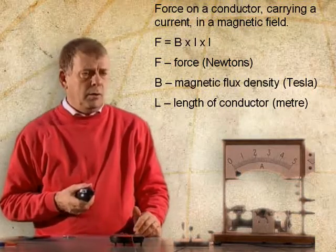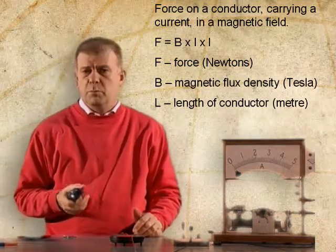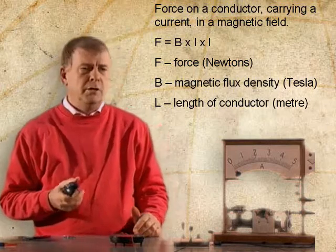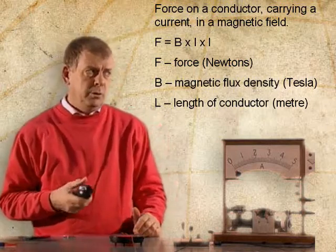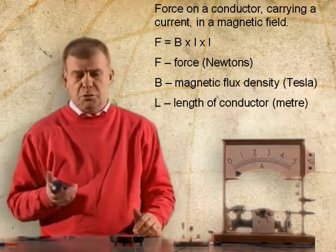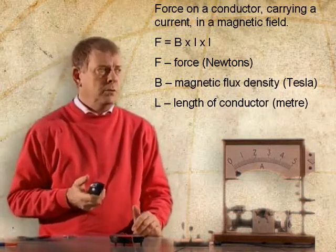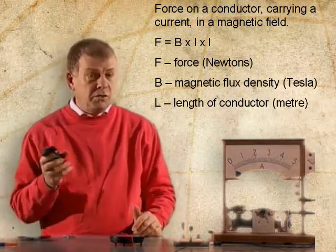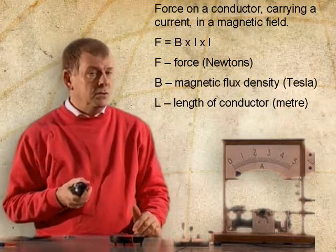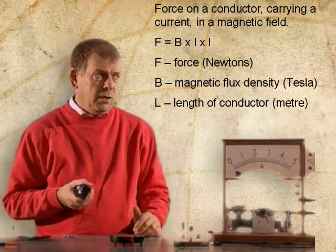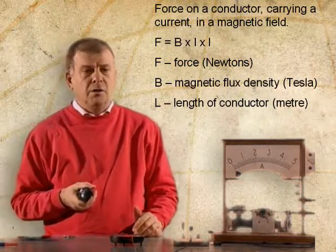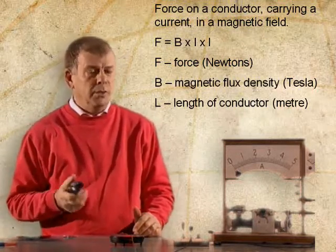We're going to be using the formula F equals B times I times L, where F is the force in Newtons, B is the magnetic flux density in Teslas, and L is the length of the conductor in meters.